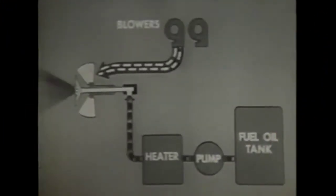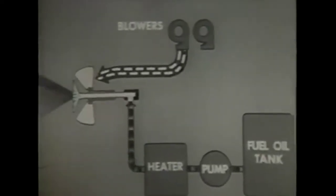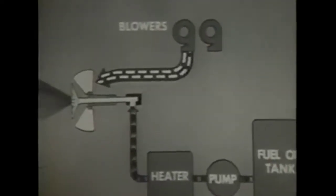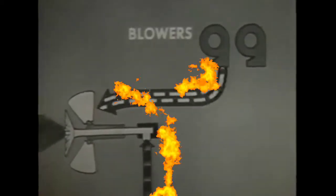Controlling the forced draft blowers is the principal method of controlling the quantity of air reaching the burner. For example, to increase the air a moderate amount, you increase the speed of the blower in service. Or, if even more air is needed, you cut in another blower. You can make minor adjustments in the air supply with the air doors.